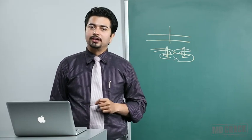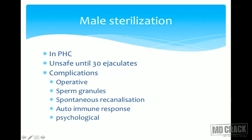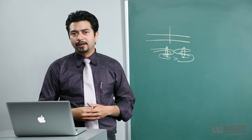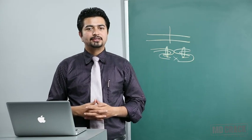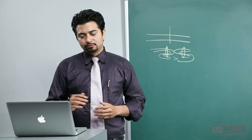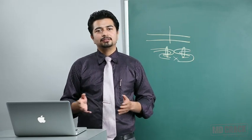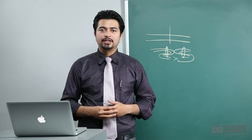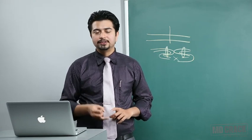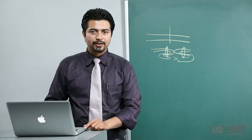Despite precautions, spontaneous recanalization can still very rarely occur. You can also have an autoimmune response — sperms are normally protected by a sperm-blood barrier similar to the blood-brain barrier. If that barrier breaks down, the body can mount a mild autoimmune reaction against the haploid sperm cells. The psychological side effects, as already discussed, are unfounded. A male who undergoes vasectomy is entitled to two days of paid vacation in central government jobs.